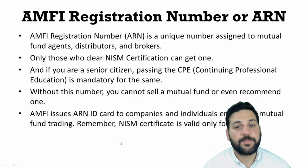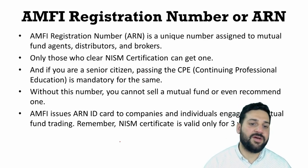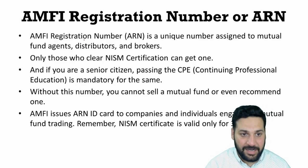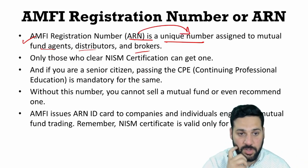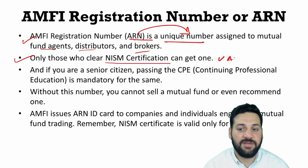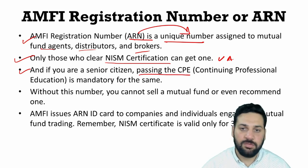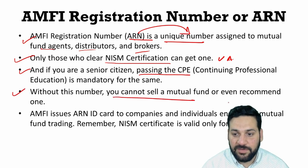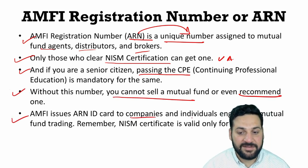What is the ARN number? After a distributor or advisor appears for the NISM 5A exam, they need to register and apply for the ARN card through the official website of AMFI. ARN is a unique number assigned to the mutual fund agent, distributor, or broker. Only those who clear the NISM 5A certification exam can get it, though senior citizens who have passed CPE — Continuing Professional Education — can also obtain it. Without the ARN number you cannot sell or even recommend a mutual fund. AMFI issues the ARN card to companies and individuals engaged in mutual fund distribution.